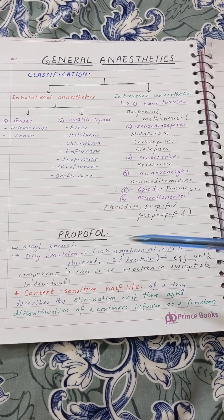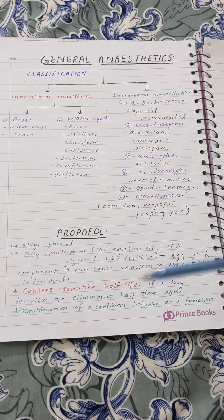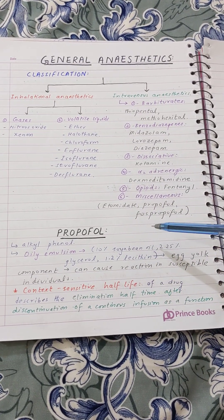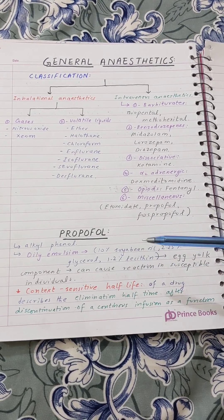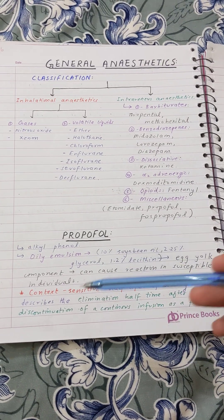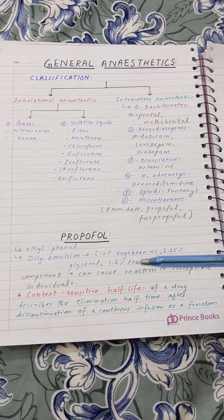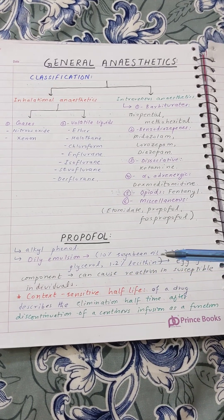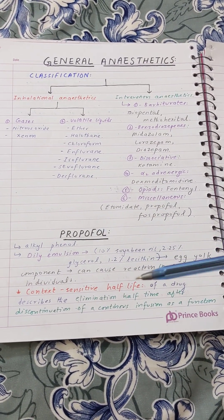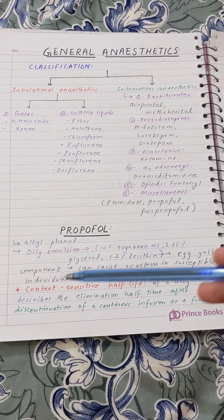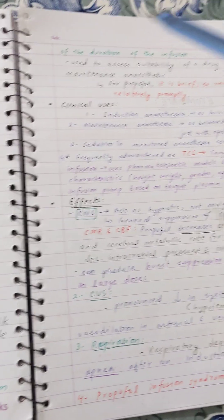This is why propofol is given as a continuous IV infusion. For most drugs studied in pharmacology, we give a single dose and discontinue — that is the standard half-life from a bolus. But for drugs given as continuous infusions, we use the term context-sensitive half-life. Context-sensitive half-life describes the elimination half-life after discontinuation of a continuous infusion as a function of the duration of that infusion.